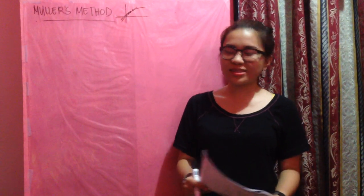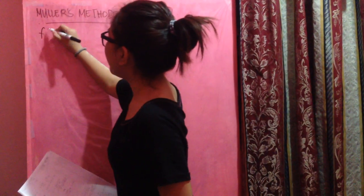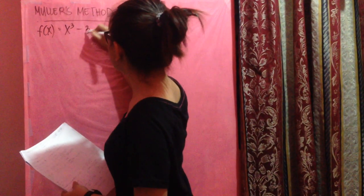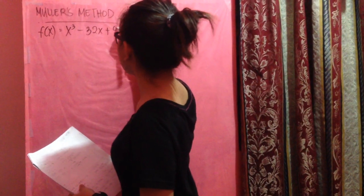For the Müller's method, we have an example of f(x) equals x cubed minus 32x plus 8.